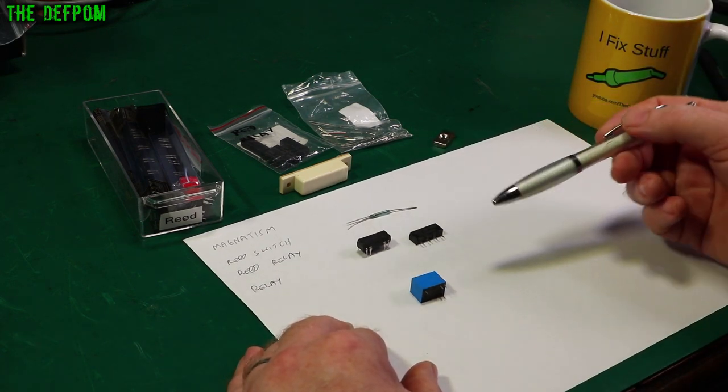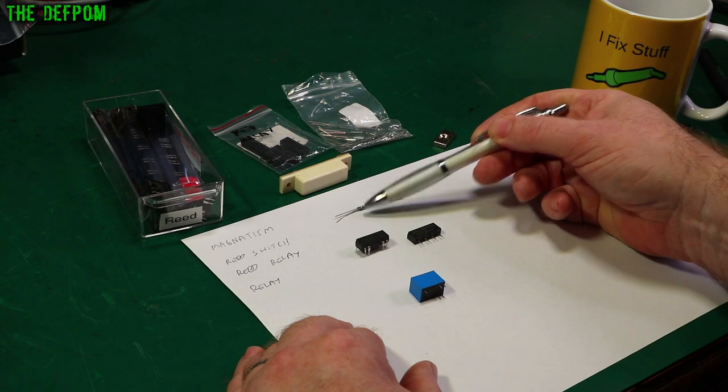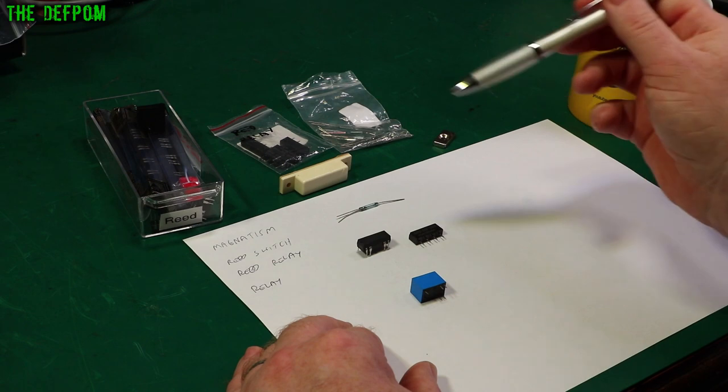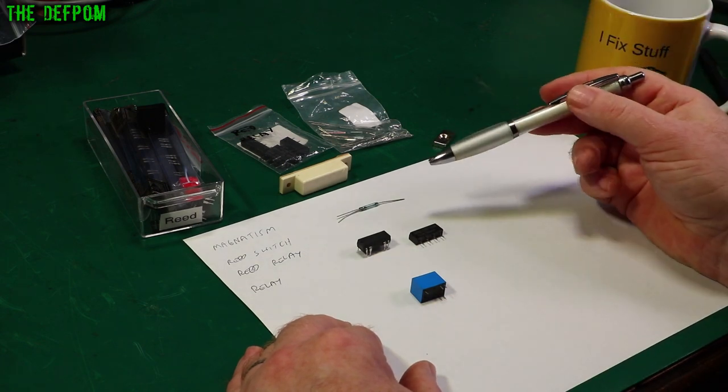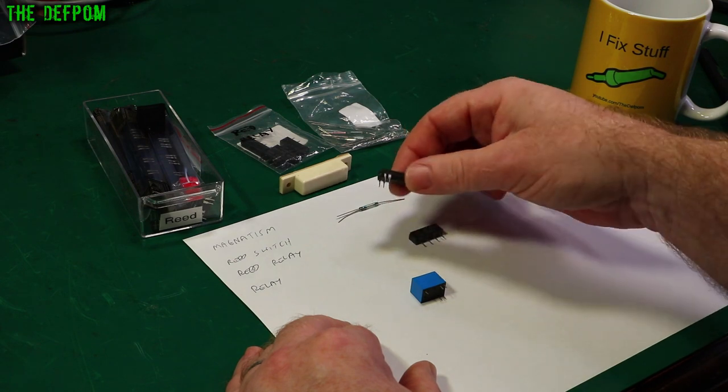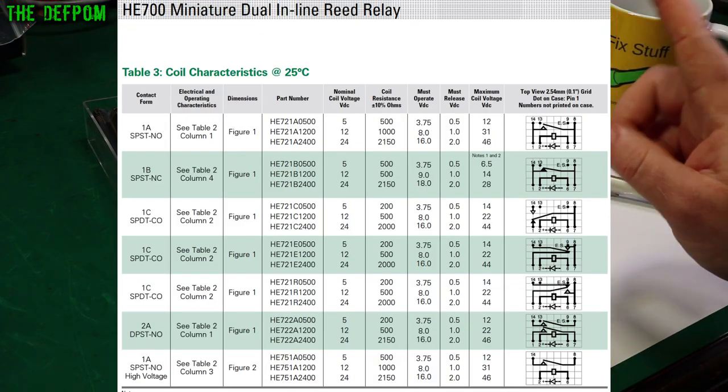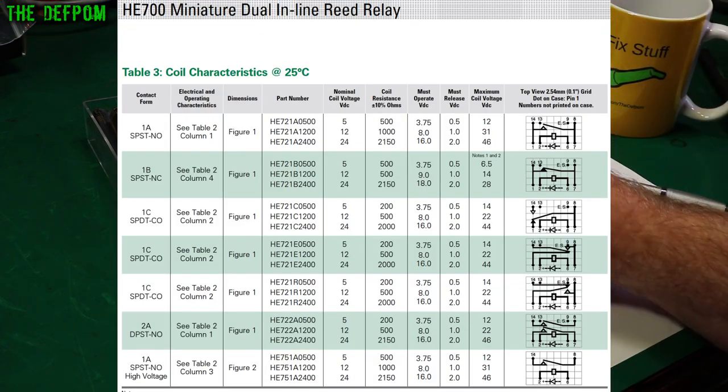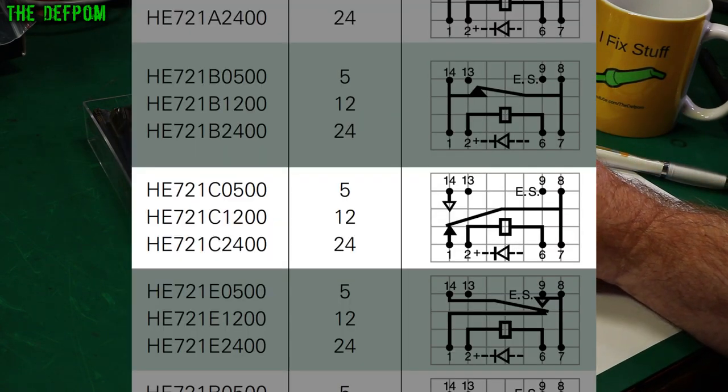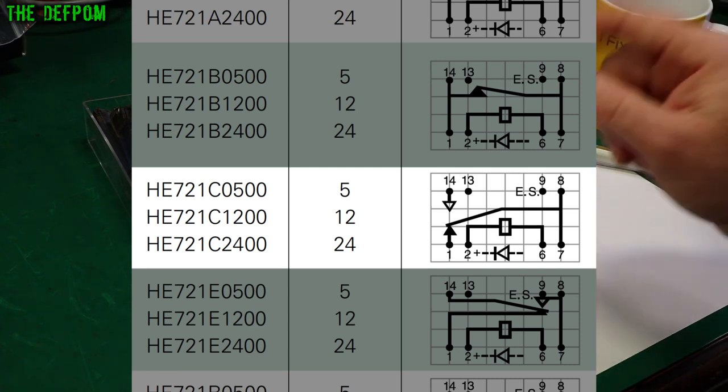Here I have a few different examples. I've got a reed switch here. This is a single pole double throw. This is an open and closed reed switch, not so common but you can get them. I've got loads of different ones here. Here's a reed relay based on a 14-pin DIP package. There's loads of different pinouts for these particular devices. This is a Hamlin HE721C0500.